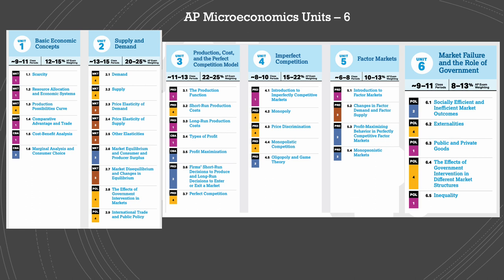These skills would be applied throughout the units in the microeconomics course, which are six units. We'll start with the basic economic concepts, which entails scarcity, resource allocation, graphing of the PPC — the production possibilities curve — and we'll move to cost-benefit analysis and comparative advantage, which is also very important. Then we'll move to the main concepts of supply and demand, which entails graphing, types of price elasticity of demand and supply, market equilibrium, disequilibrium, the effects of government interventions in markets, and international trade.